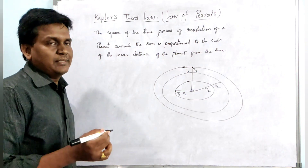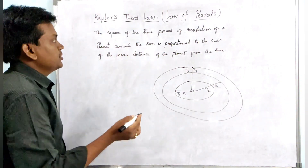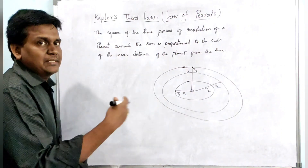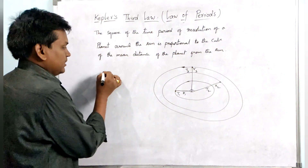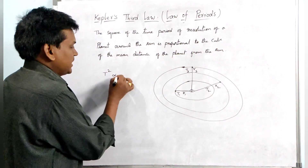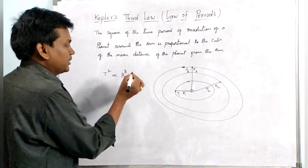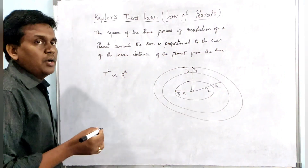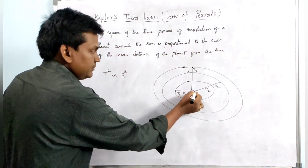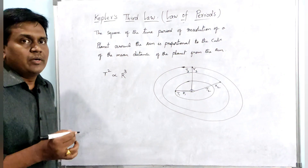So Kepler's third law states that the square of the time period of revolution of the planets around the sun is proportional to the cube of the mean distance of the planet from the sun. That's why Kepler's third law is given as: time period squared is directly proportional to the cube of the distance from the sun to the planet — that is, the cube of the radius.